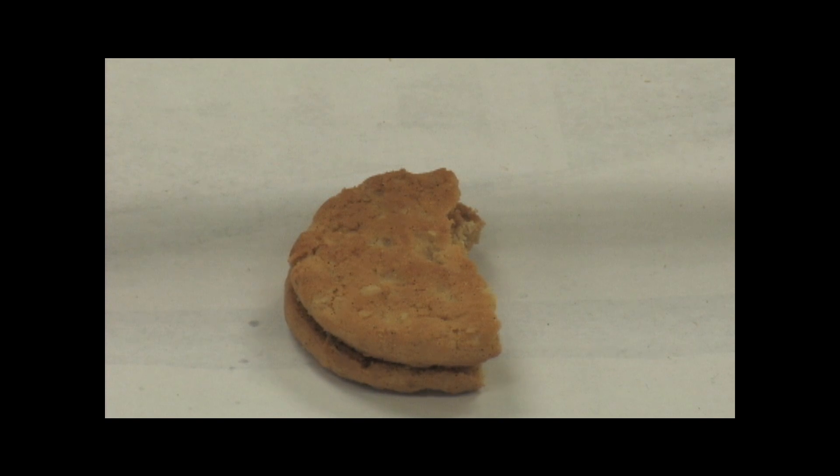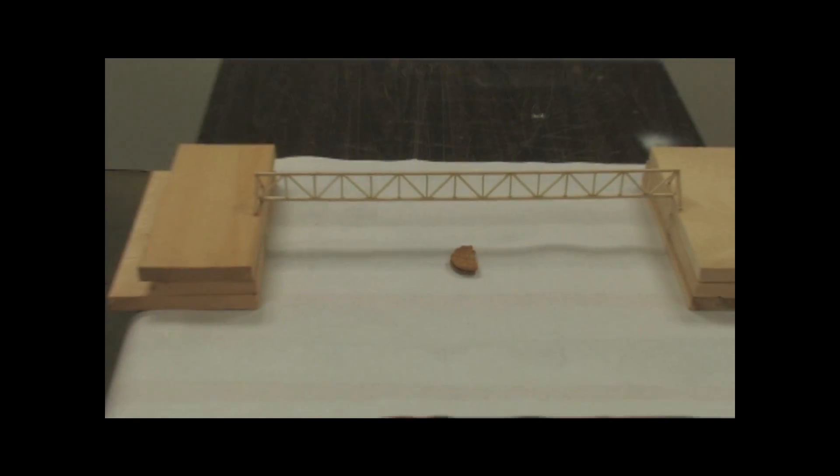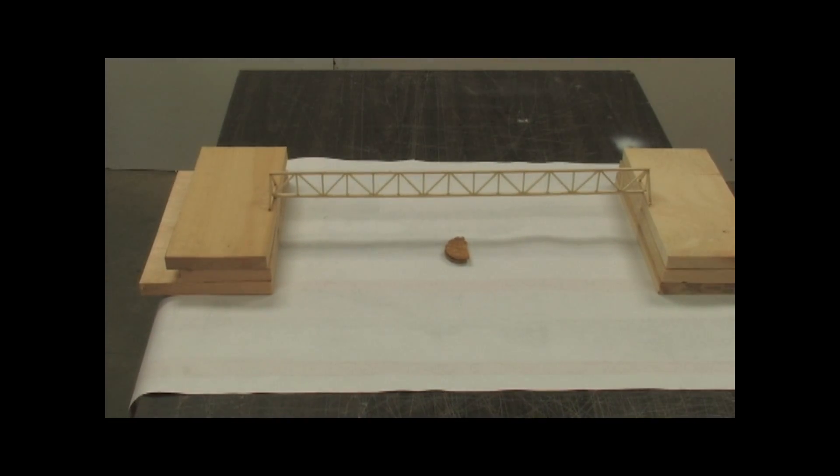We will be using a half-eaten Girl Scout cookie for scale. As you can see, this is an example of a planar truss.